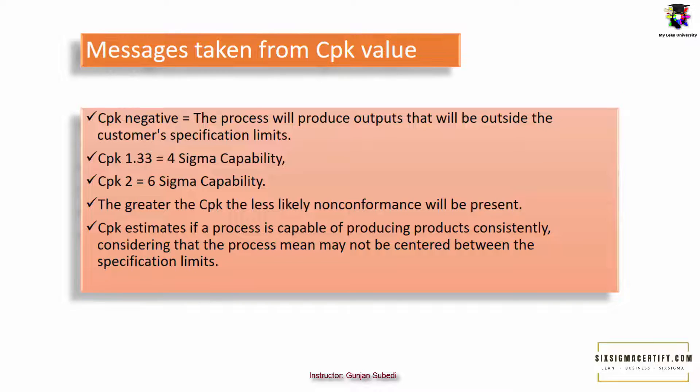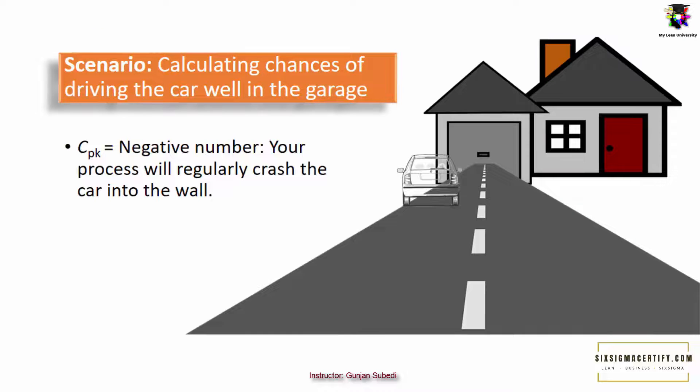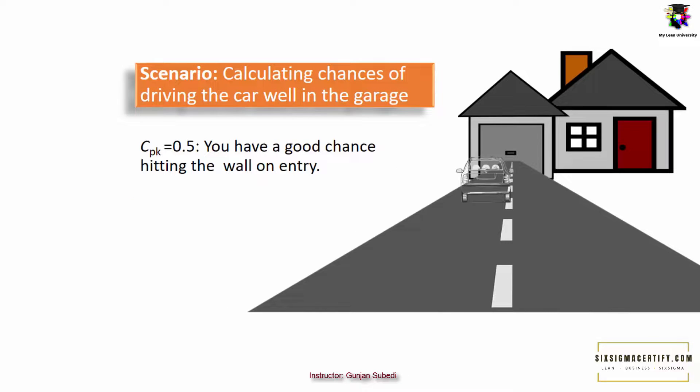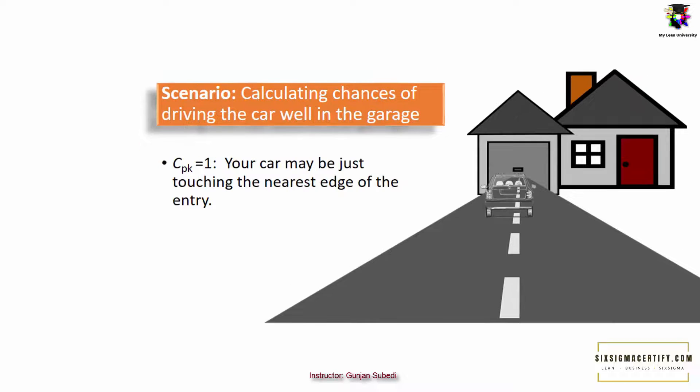I want to make this easy for you. Let us understand CpK with an example. Suppose you want to calculate your chances of driving the car well inside the garage. And suppose you have just finished long driving. If your CpK is a negative number, your process will regularly crash the car into the wall. If CpK is 0.5, you have a good chance of hitting the wall on the entry. If CpK is equal to 1, your car may be just touching the nearest edge of the entry.